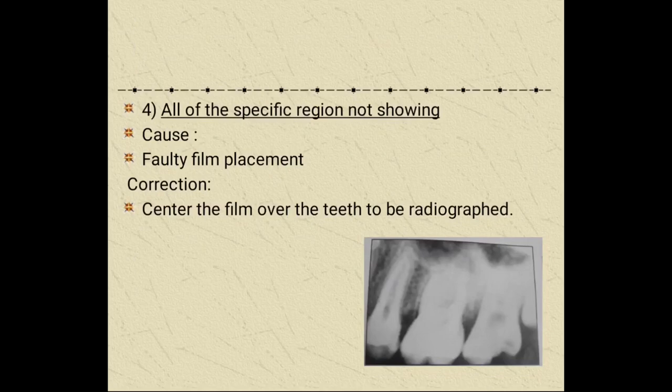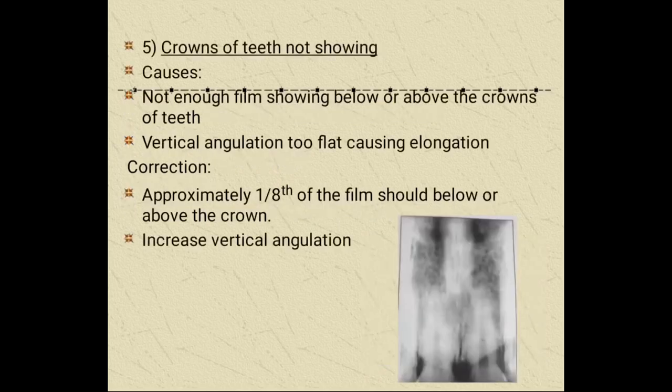Next, a specific region is not showing, which could be due to faulty film placement. We can correct it by centering the film over the teeth to be radiographed. Also, the crown of the teeth may not show when not enough film is showing below or above the crown of the teeth, or when vertical angulation is too flat causing elongation. We can correct it by keeping approximately one-eighth of the film below or above the crown and increasing the vertical angulation.